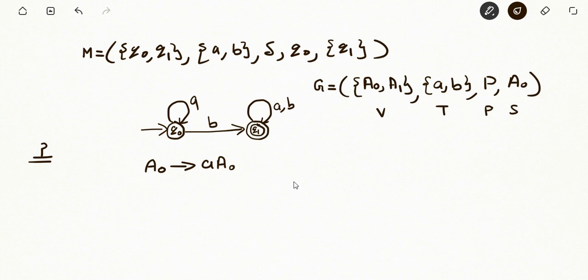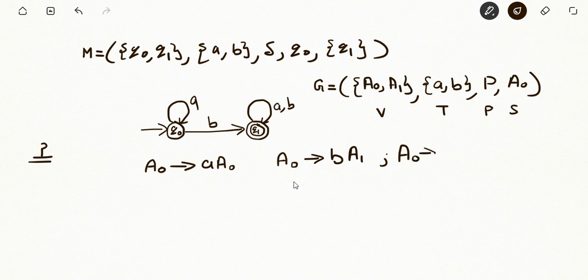Next consider this transition: q₀ upon receiving b goes to q₁, and q₁ is the final state. So we are going to introduce two productions for this transition, because q₁ (that is qⱼ) is the final state. Corresponding to q₀ we have: A₀ → b A₁ (where A₁ is the non-terminal for q₁), and we also introduce A₀ → b, because q₁ is the final state.